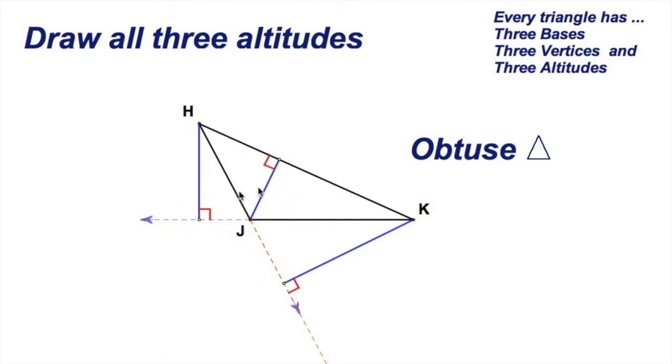Now remember the other ones, they all had an intersection. Well, these do too. If we extend the altitudes like that, they're all going to meet here outside of the figure. So look at that. The obtuse triangle does have an orthocenter, and this orthocenter is on the outside of the triangle. Pretty cool.